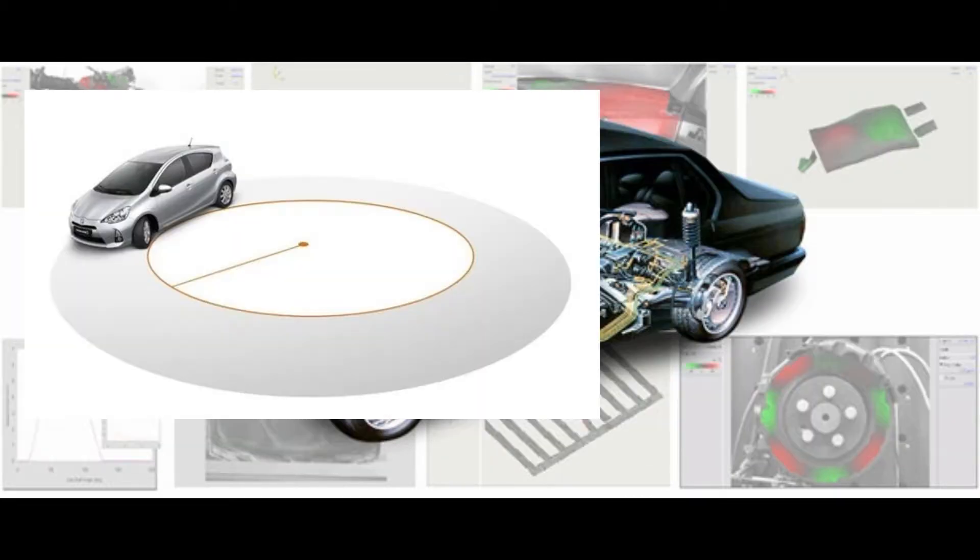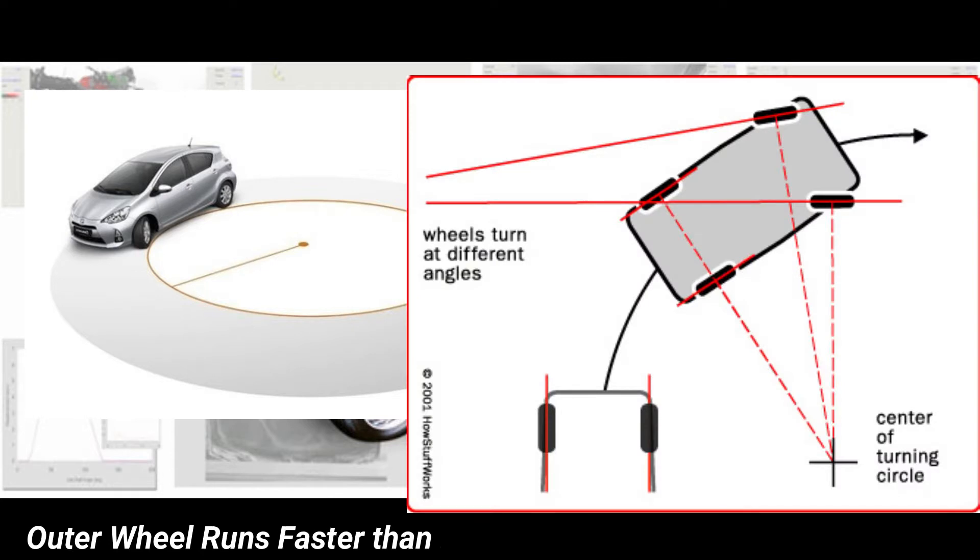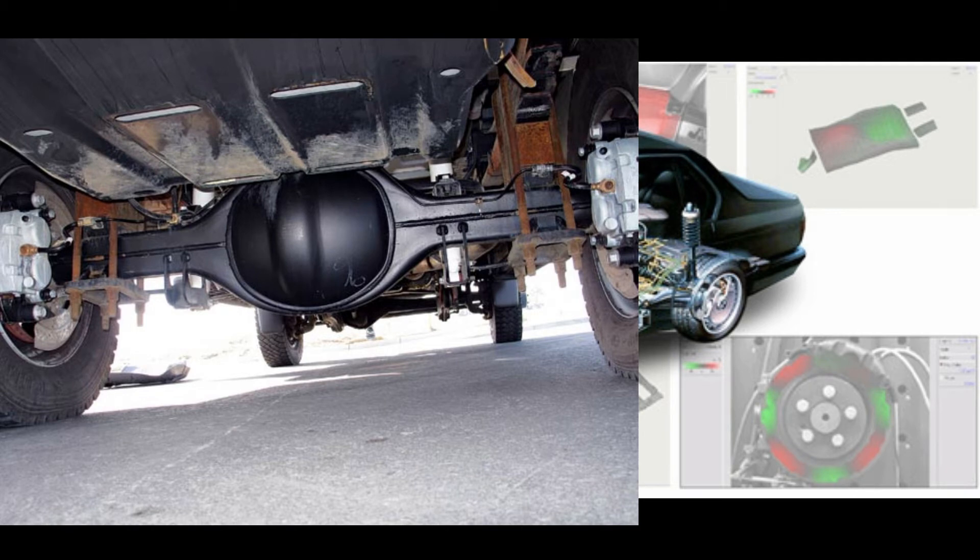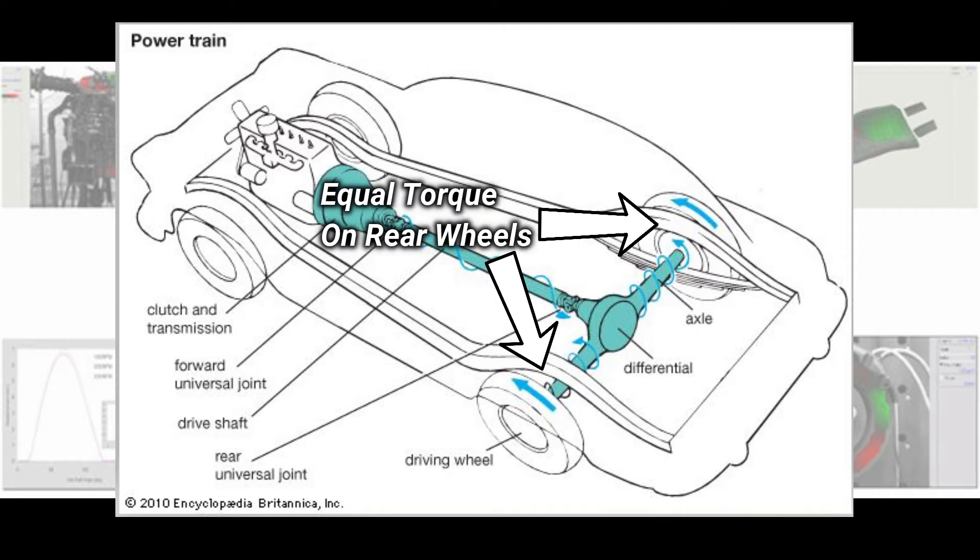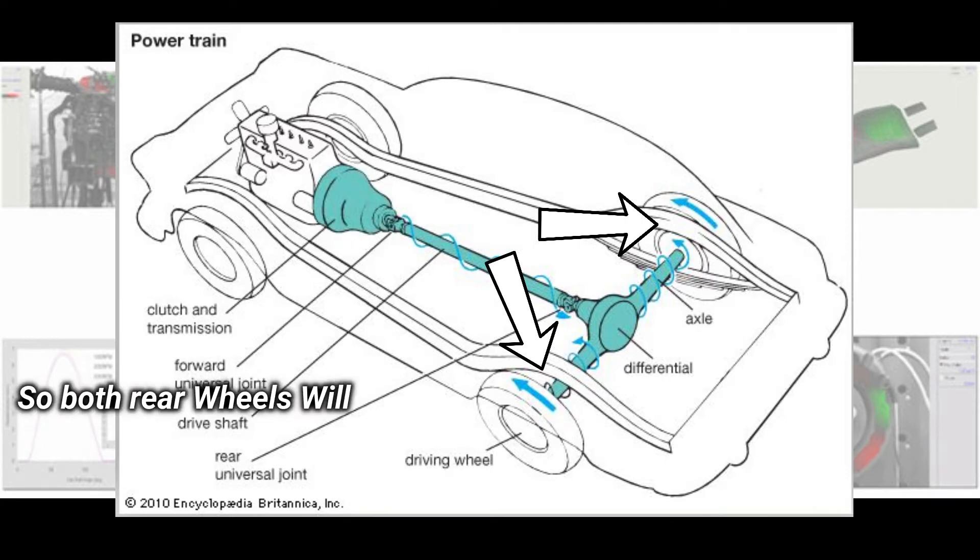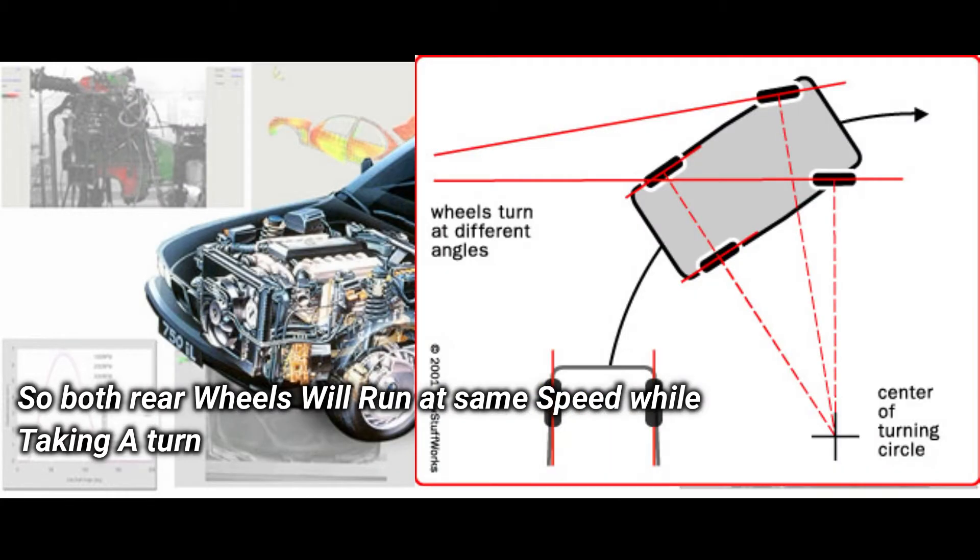While a vehicle is taking a turn, its outer wheel runs faster than the inner wheel. If we connect the propeller shaft by rear axle without using differential gear, then the torque transmitted to both rear wheels is equal in any condition. So both rear wheels will run at the same speed while taking a turn, which causes a problem in driving a vehicle.